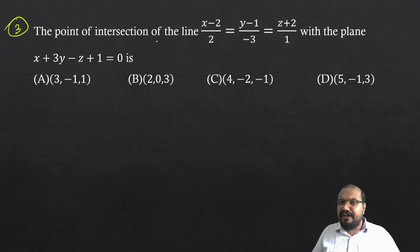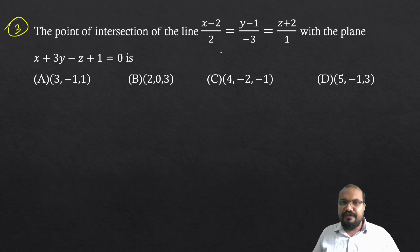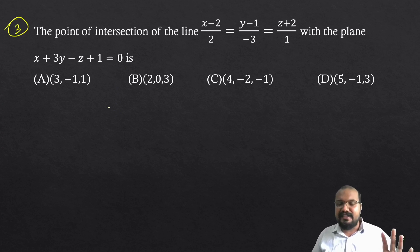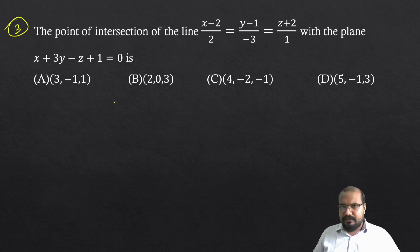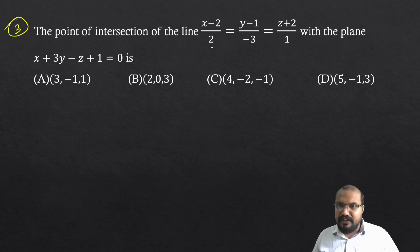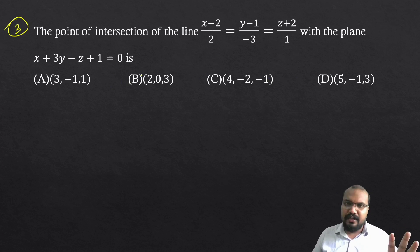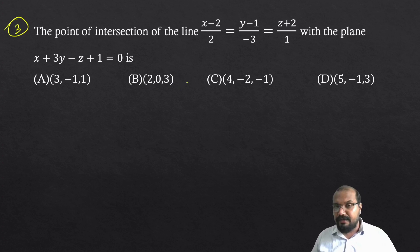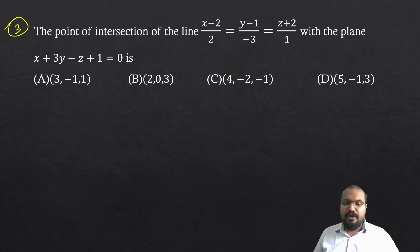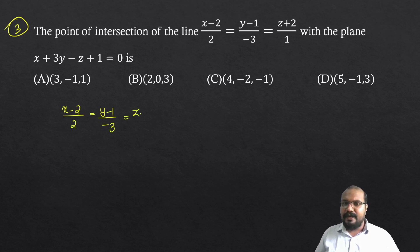Question number three: Find the point of intersection of the line (x-2)/2 = (y-1)/(-3) = (z+2)/1 with the plane x + 3y - z + 1 = 0. We need to find where the line meets the plane. The method is to substitute the general point into the plane equation.